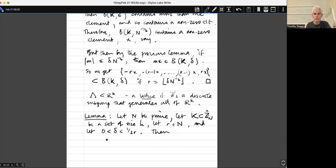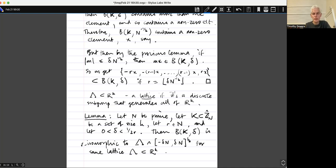Then the Bohr set B K Delta is R isomorphic, so Freiman isomorphic of order R, to some lattice intersected with minus Delta N up to Delta N to the K. And it lives inside R to the K.